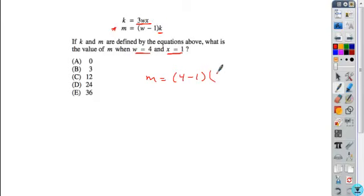So right here we'll replace 3 times w which is 4 times x which is 1, and now it's just a matter of simplifying what you have. So 4 minus 1 is 3, 3 times 4 is 12 times 1 is 12, 3 times 12 gives you your solution E of 36.